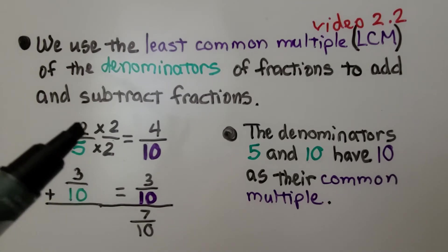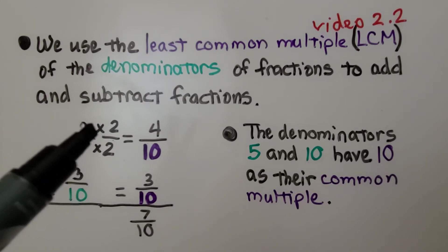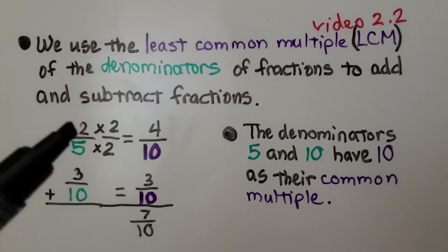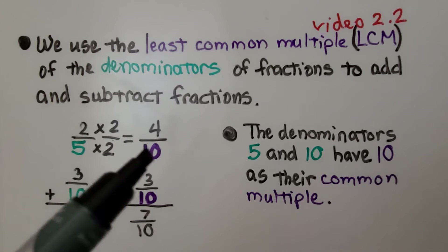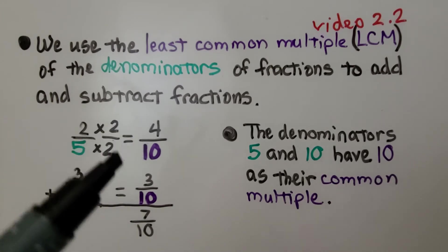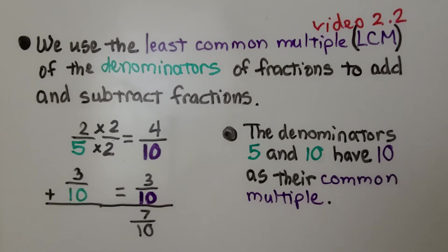5 needs to be multiplied by 2 to be a 10. The 2 gets jealous and wants to be multiplied by the same multiplier. So we have 2 times 2, which is 4, and 5 times 2, which is 10. Now they both have the same denominator. We can add 4 tenths and 3 tenths to get 7 tenths.